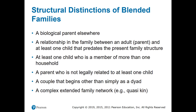Structural distinctions of blended families include: a biological parent elsewhere, a relationship in the family between an adult and at least one child that predates the present family structure, at least one child who is a member of more than one household, a parent who is not legally related to at least one child, a couple that begins other than simply as a dyad, and a complex extended family network, sometimes referred to as quasi-kin.